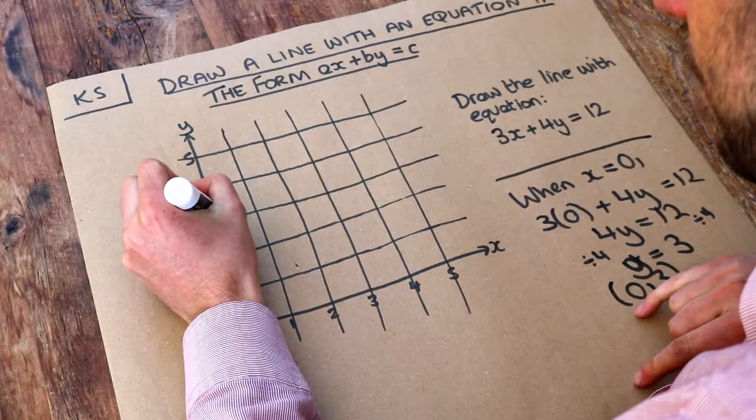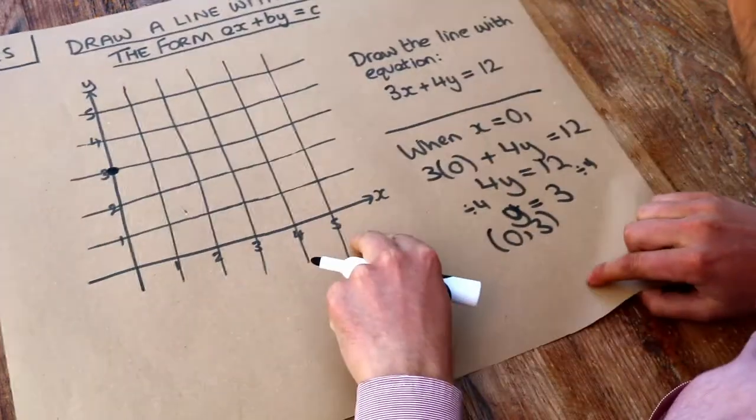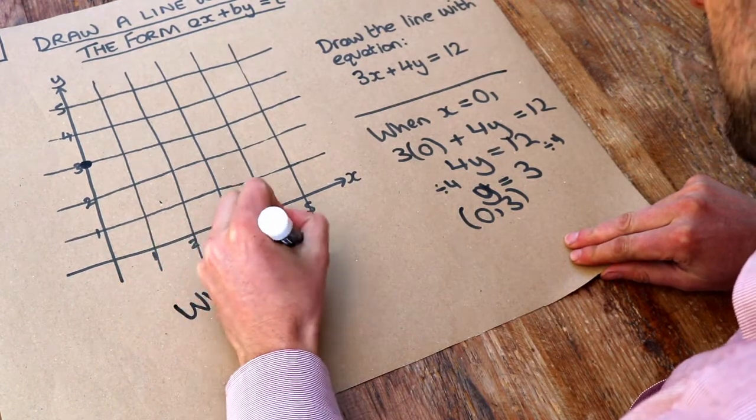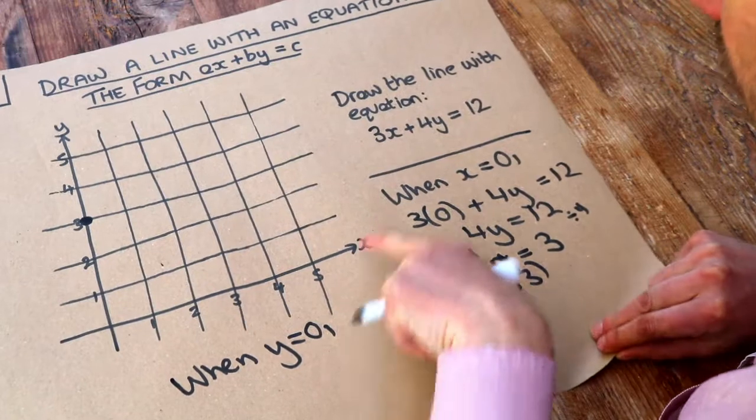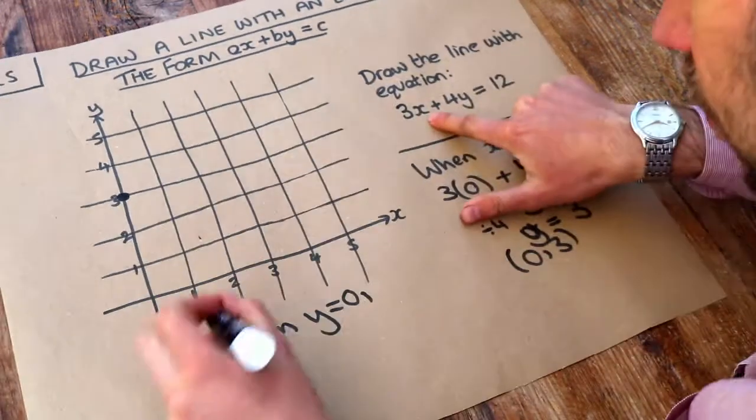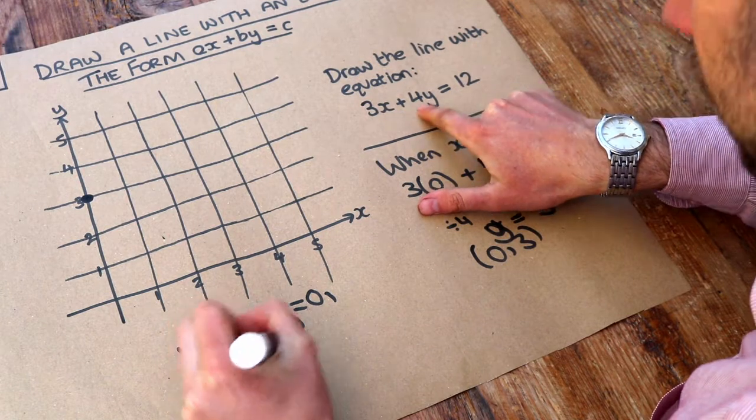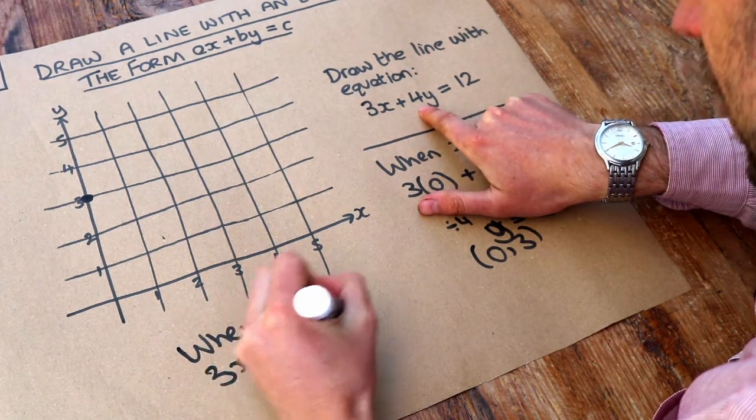Let's do the same but when y is zero. When y is zero, let's substitute zero as y into the equation. We get three x plus four times zero equals twelve. Now four times zero is zero, so we have three x equals twelve.